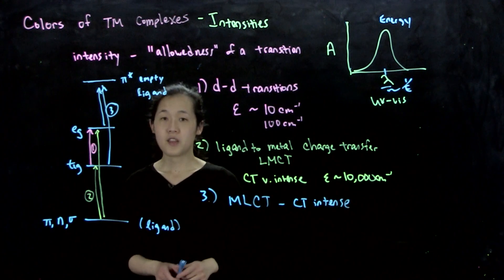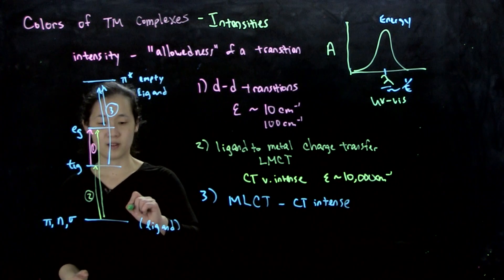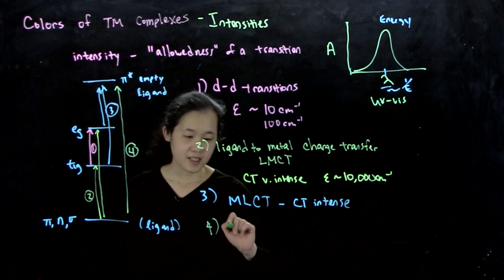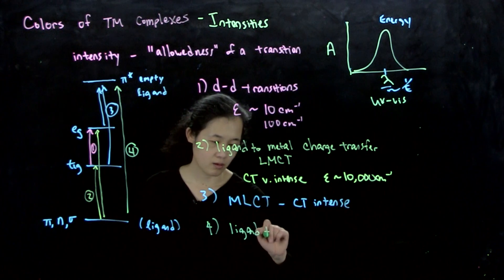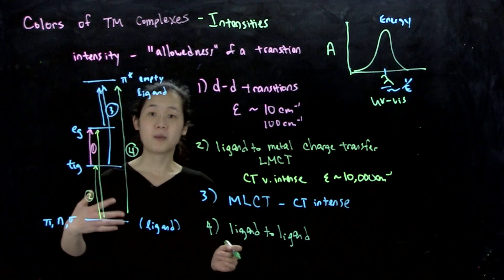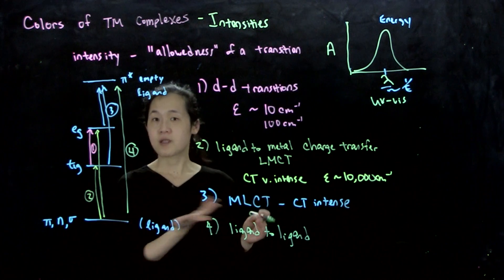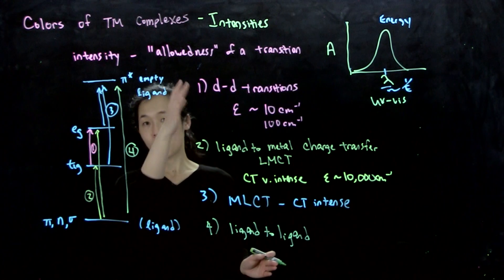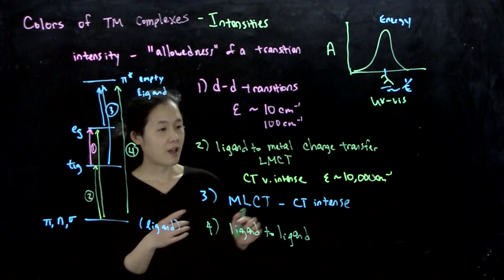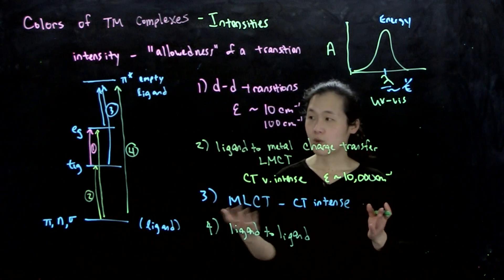And then the last type could be if we just go from a ligand-centered orbital to a ligand-empty orbital. Type 4. So ligand to ligand. These can also be pretty intense. Often we don't see these because they're very high energy for reasons we talked about, so they don't absorb in the visible. But it is possible if you have a special ligand to see these types of transitions as well. So these are the four major kinds for a metal complex, and that's why it's important to be able to distinguish these. You have the hallmark signatures of charge transfer versus d-d, so it's one way to distinguish what's going on in your complex.